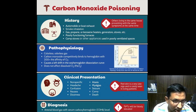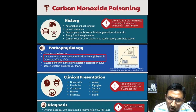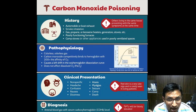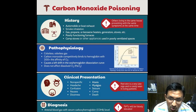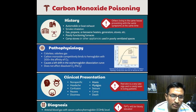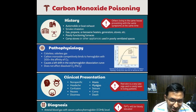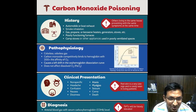The danger of carbon monoxide lies in its ability to bind with hemoglobin in the blood — the molecule that normally transports oxygen. The affinity of carbon monoxide for hemoglobin is 200 times greater than that of oxygen. At such binding affinity, it will bind with hemoglobin and this results in the formation of carboxyhemoglobin, COHb.